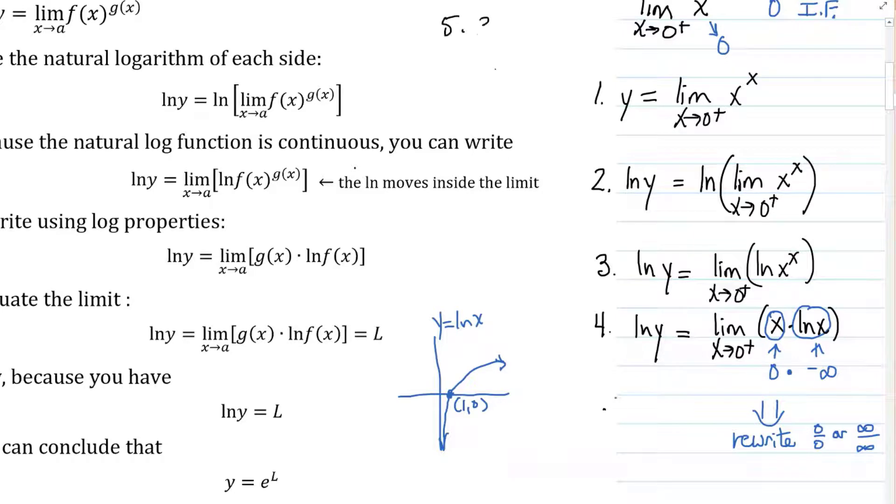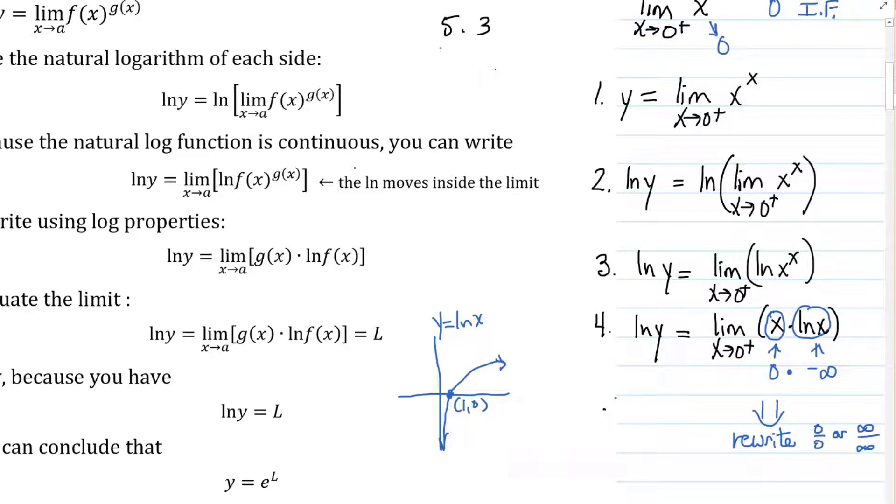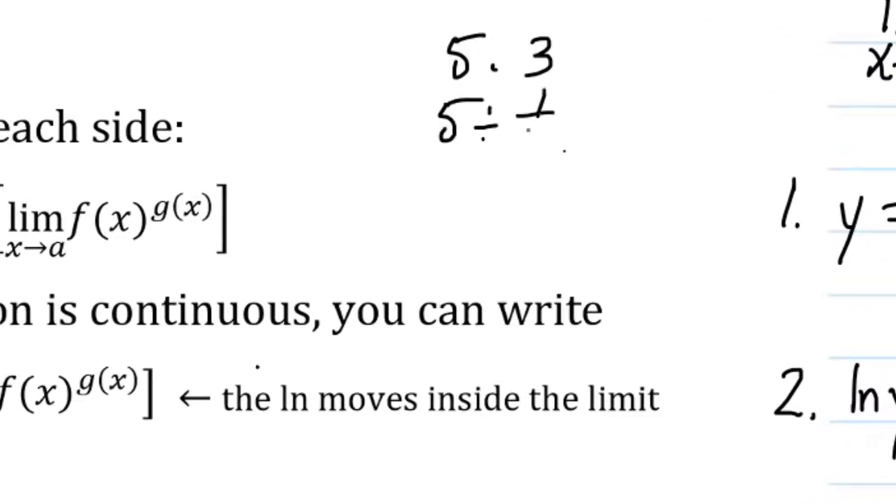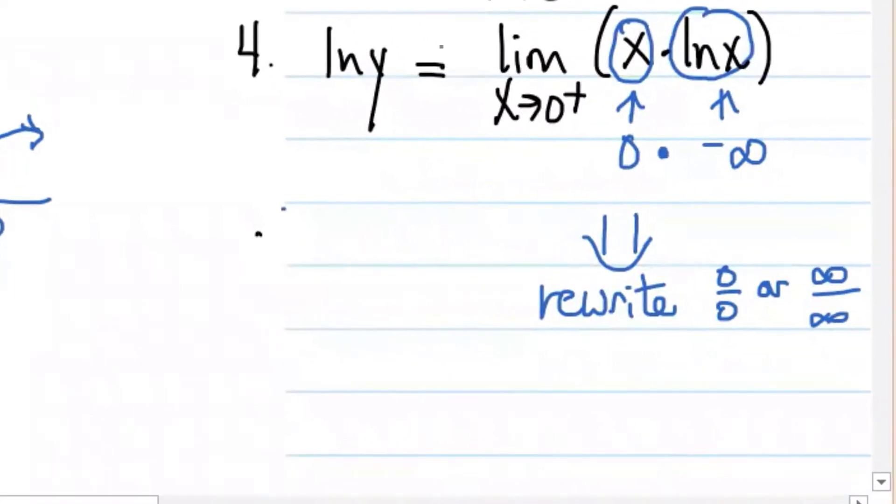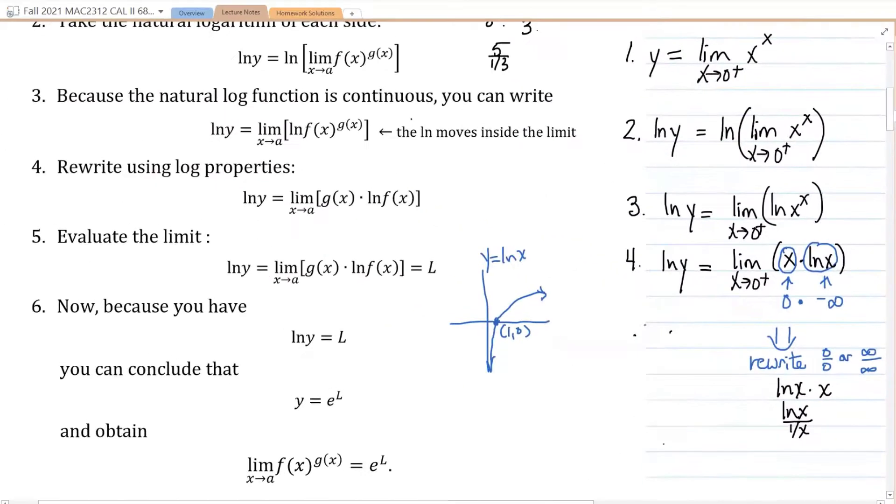Remember multiplying two numbers together, like for example, if you have five times three, that's the same thing as dividing five by the reciprocal of three, which is five divided by one third. We could do the same thing with natural log of x times x. I'm going to change the order just because it's easier to think about that way.